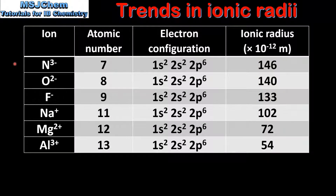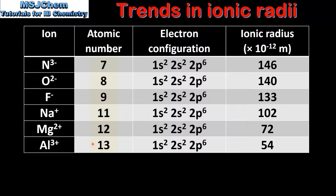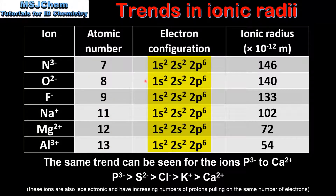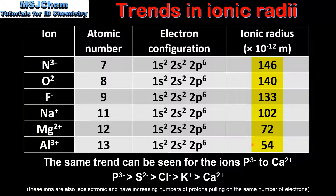Next we look at the data for the trend in ionic radii from the nitride ion all the way to the aluminium ion — starting with the nitride ion which has 7 protons in its nucleus up to the aluminium ion which has 13 protons. If we look at the electron configuration of the ions we can see that it's the same, therefore all these ions are isoelectronic. The trend in ionic radii shows a decrease: the nitride ion has the largest ionic radius and the aluminium ion has the smallest. The reason for this is an increasing number of protons pulling on the same number of electrons, resulting in increased attraction between the nucleus and the electrons, which causes the ionic radius to decrease.